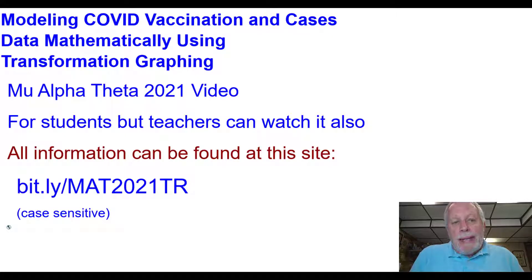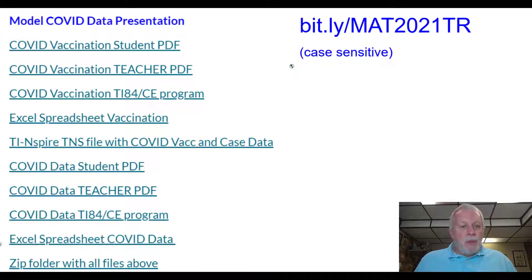Modeling COVID vaccination and cases data mathematically using transformation graphing. This is from Mu Alpha Theta 2021. It is for students, but teachers can watch it also. All information can be found at this site and it is case sensitive. Press pause as needed anytime during the video.